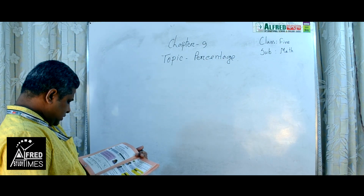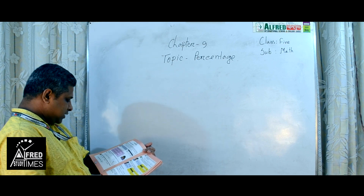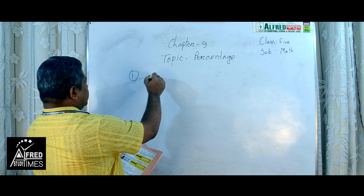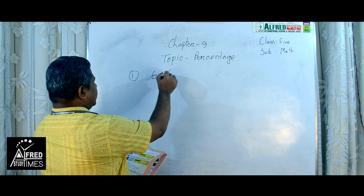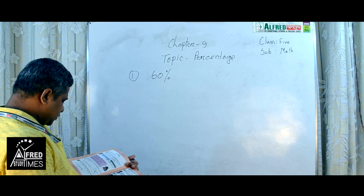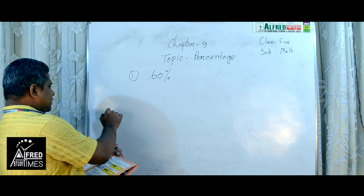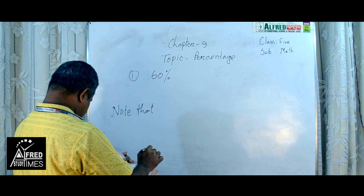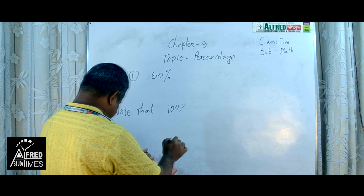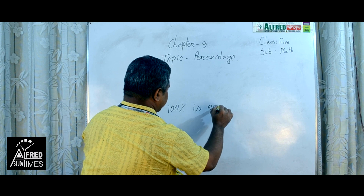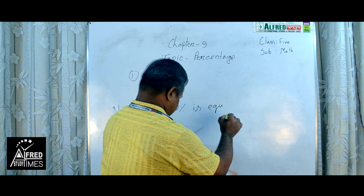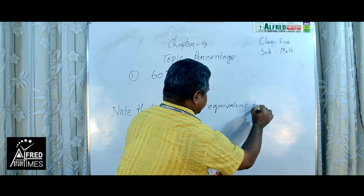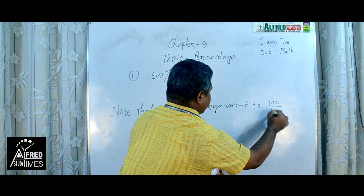Percentage. Question number 1: how to express a fraction in decimal. Number 1: 60%. You should know that 100% is equivalent to 100 by 100.